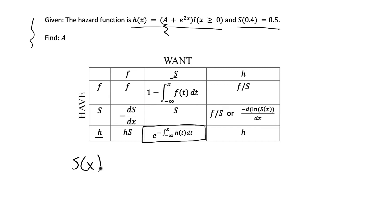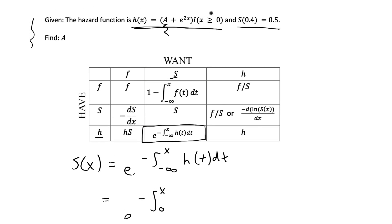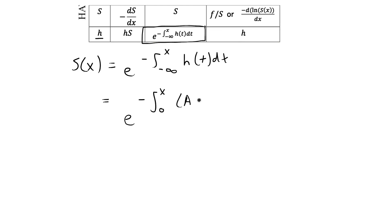Since we're given H and want to solve for S, we're going to use this equation: S(x) = e to the negative integral from 0 to x of h(t) dt. We are given the hazard ratio in the problem, so I'm going to plug in h(x) for h(t). That gives e to the negative integral from 0 to x — because the hazard ratio only exists for x ≥ 0 — and then I plug in (a + e^(2x)) dx.